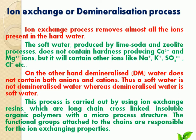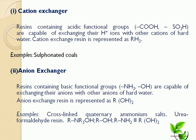Two types of resins are used: cationic exchangers and anionic exchangers. The cationic exchanger contains acidic functional groups like carboxylic acid and sulfonic acid, which are capable of exchanging their H⁺ ions with the cations of hard water like calcium and magnesium ions. Cationic exchange resin is represented as RH₂.